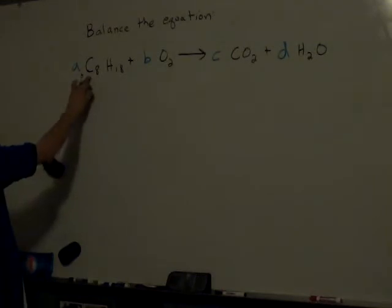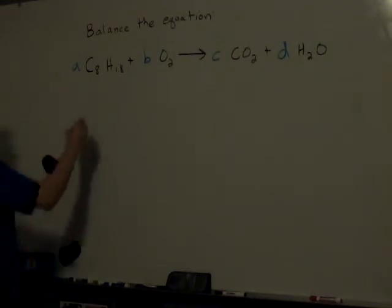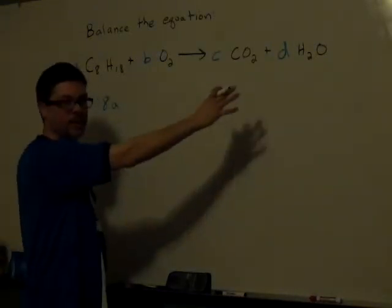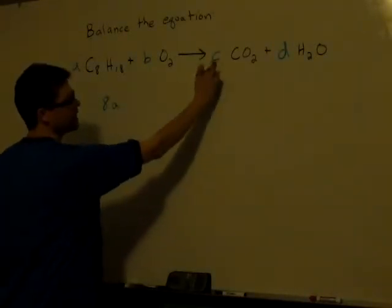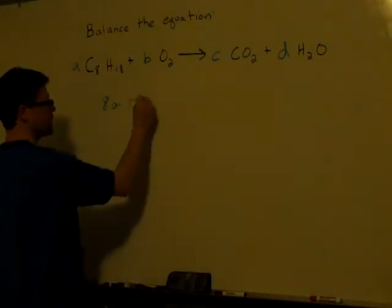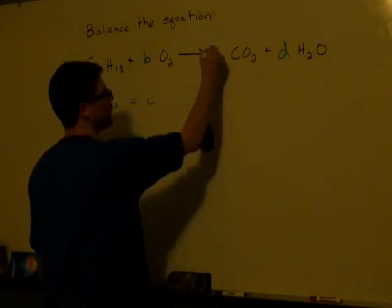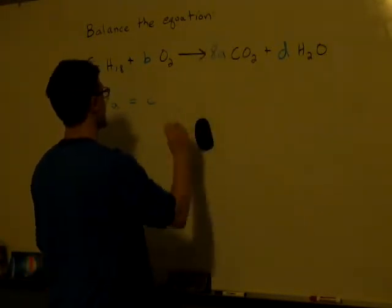On this side of the equation, I have 8 times A carbons, 8 times A carbons. I have to have the same amount on the other side of the equation, on this side I have C of them. So that means 8 times A is equal to C. So I'll take my C and I'll replace it with 8 times A.